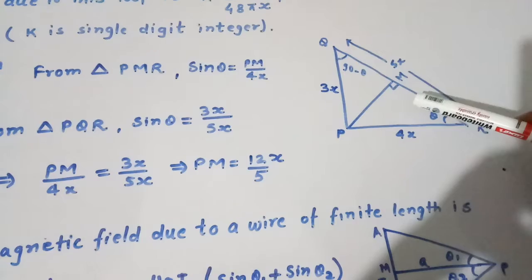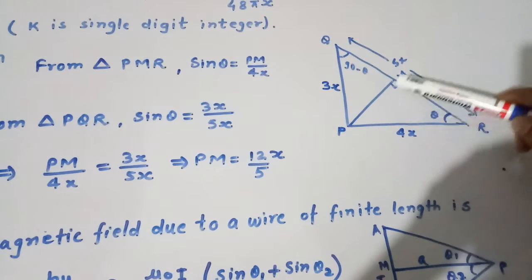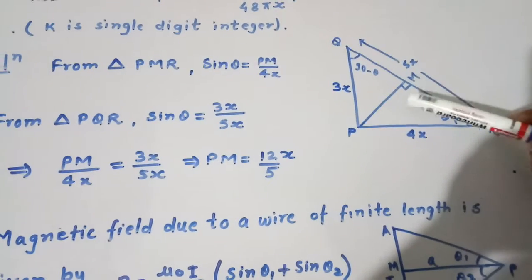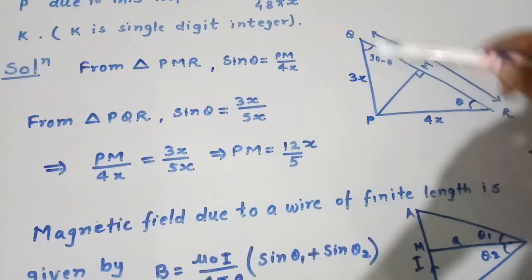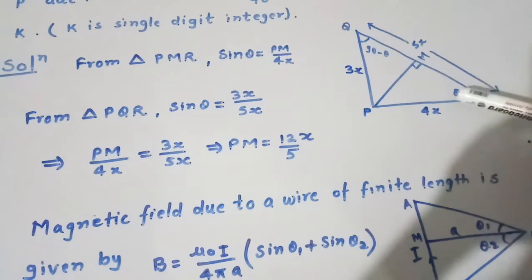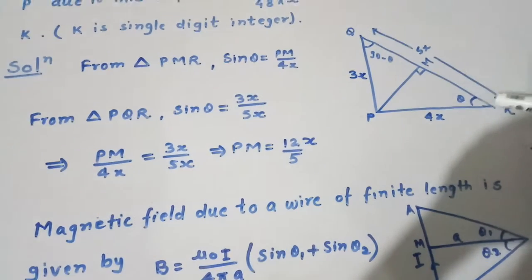So in this triangle, sin θ will be equal to PM divided by 4X, perpendicular upon hypotenuse. In this triangle QPR, sin θ will be perpendicular, that is 3X divided by 5X.